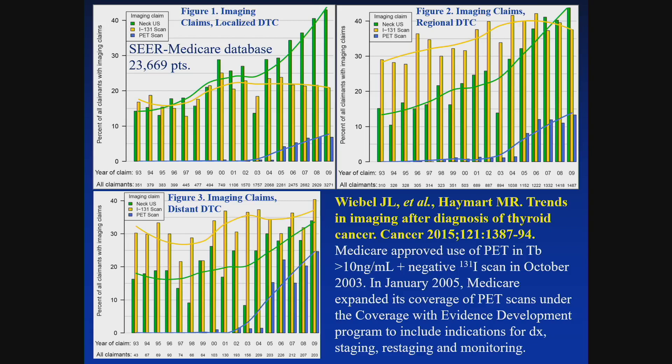With that, we will start with this rather complicated graphical representation of utilization. This is coming from Dr. Hamart's University of Michigan group, and Dr. Weibel put out some very useful studies demonstrating where we've been and where we're heading in utilization of different modalities — not just PET-CT, but also ultrasound (shown in green as neck ultrasound), I-131 whole body scan in yellow, and PET in blue. It is clear that there was not much utilization up until about 2004.